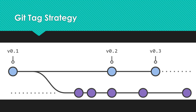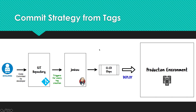We are going to talk about how to create a tag and how to create a Jenkins job that can monitor tags and run automatically whenever new tags have been created. The strategy we want to implement: when new tags are created, Jenkins will act accordingly and deploy into a sample environment.